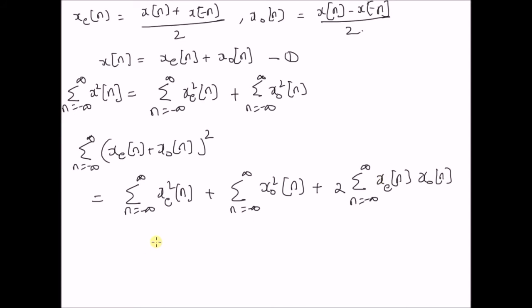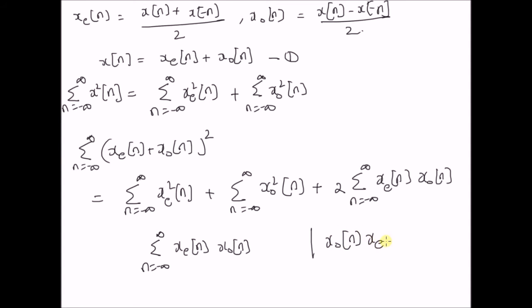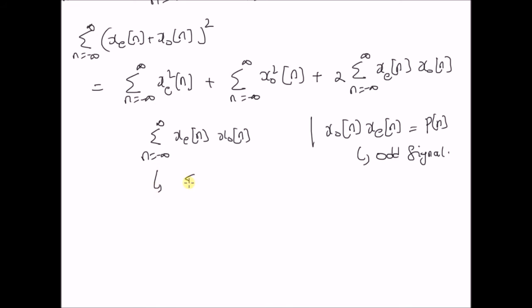Now, the third sum — that is, the sum n equal to minus infinity to plus infinity of x_e of n times x_o of n. From a previous theorem, we learnt that the product of an odd signal with an even signal is always an odd signal. That is, the product x_o of n with x_e of n, defined as p of n, is always an odd signal. Therefore, this product is an odd signal, and the sum becomes the summation n equal to minus infinity to plus infinity of p of n, where p of n is an odd signal. In the previous theorem, we learnt that this sum is always going to be 0.